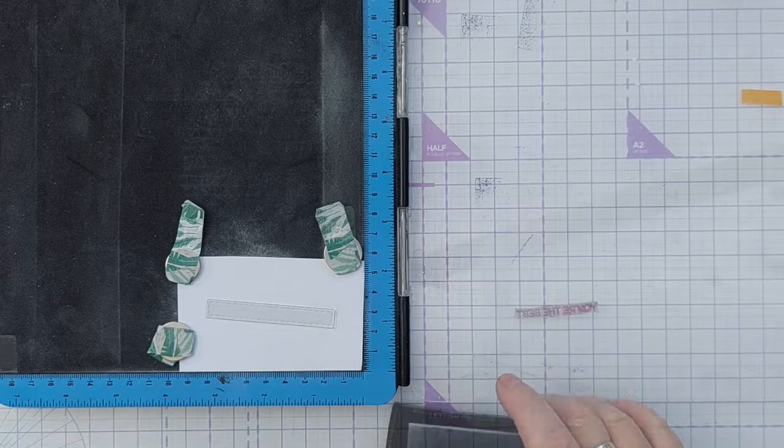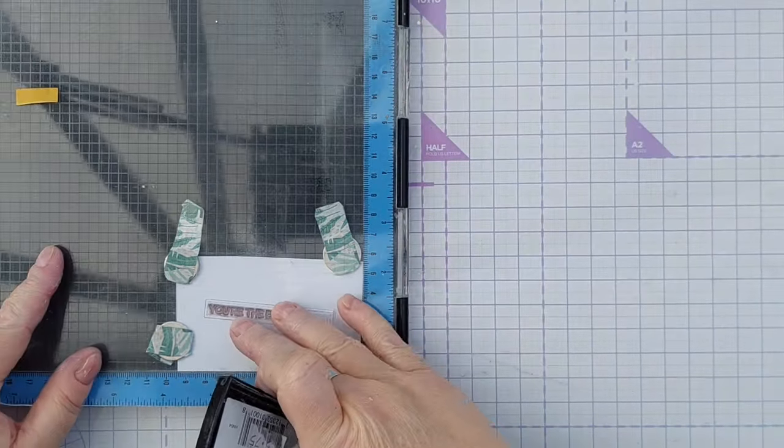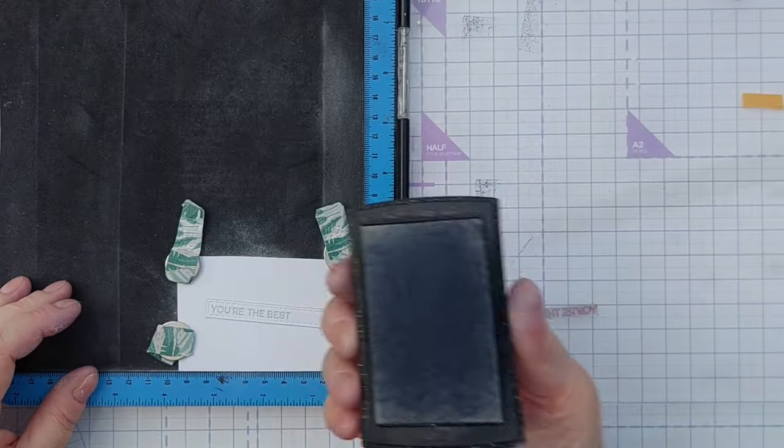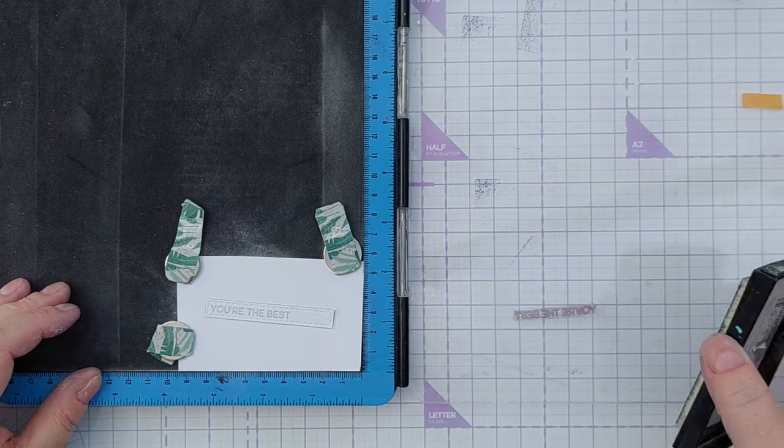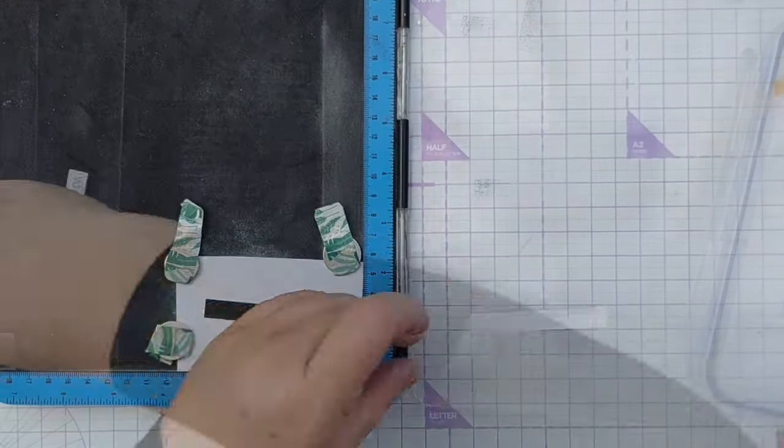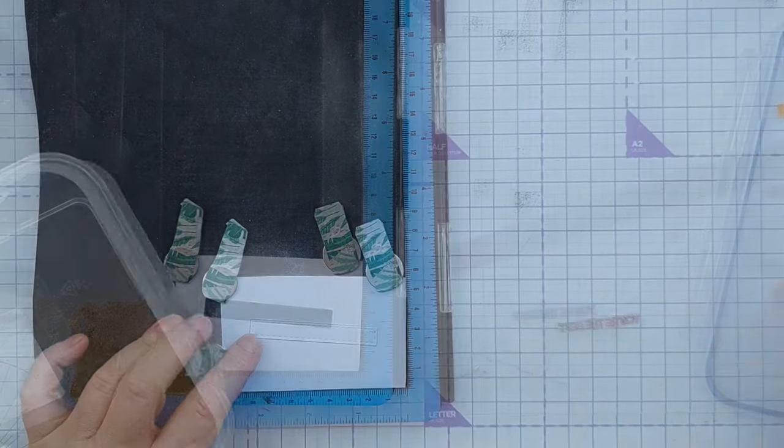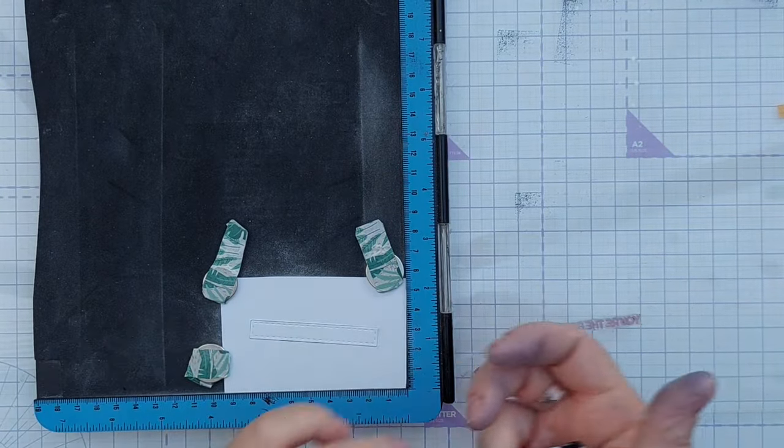I'm going to repeat that process using sticky embossing ink. This is my really mucky ink pad, it doesn't matter because I'm going to use gold. There we go.